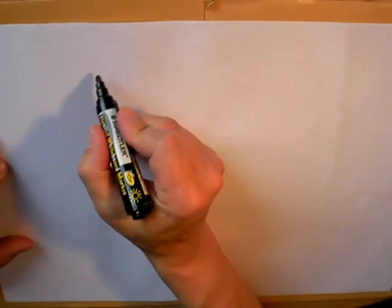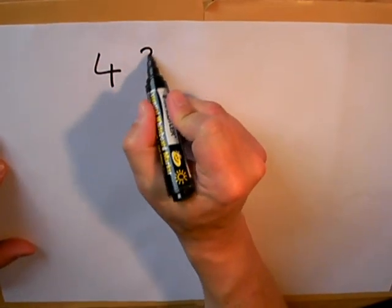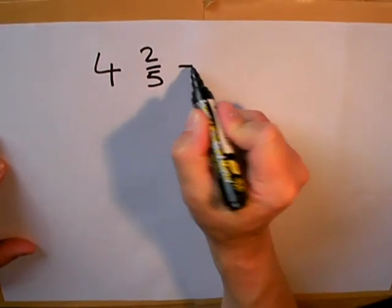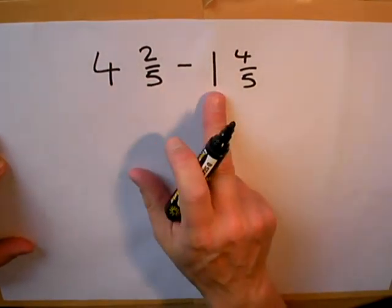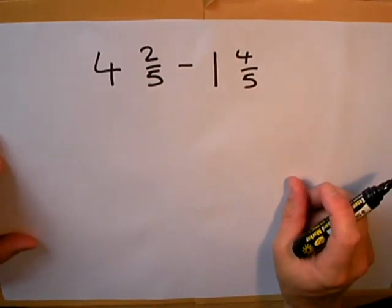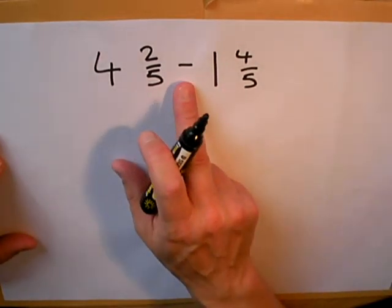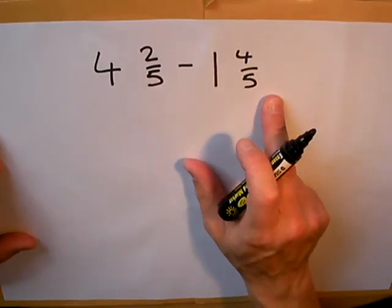Sometimes when subtracting, we do have a problem where there's not enough of the fractions to take away. Here's an example. Four whole ones take away one whole one, I won't have a problem there. But two fifths subtract four fifths, and that's going to be a problem.